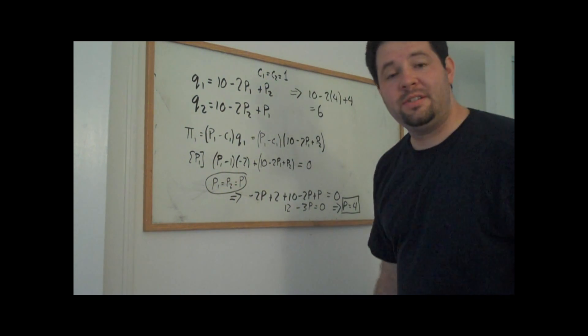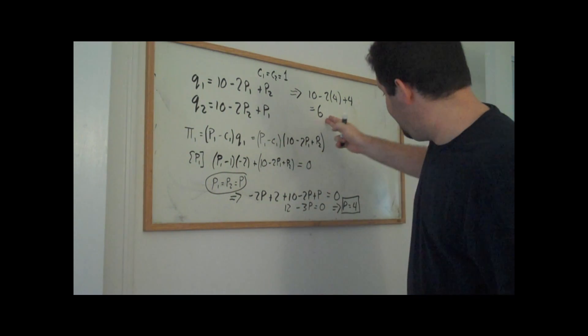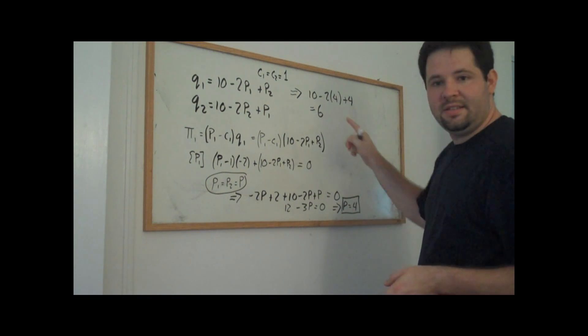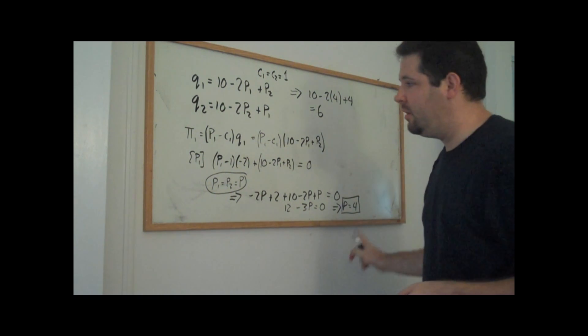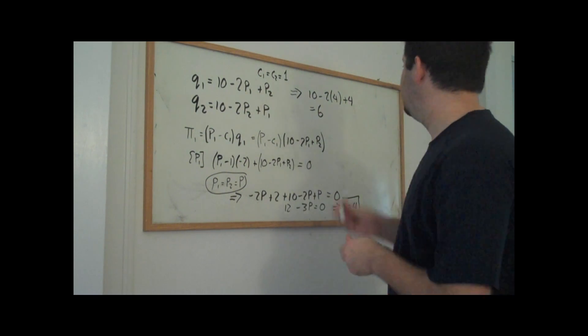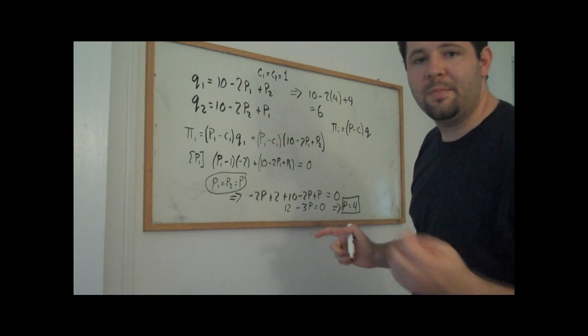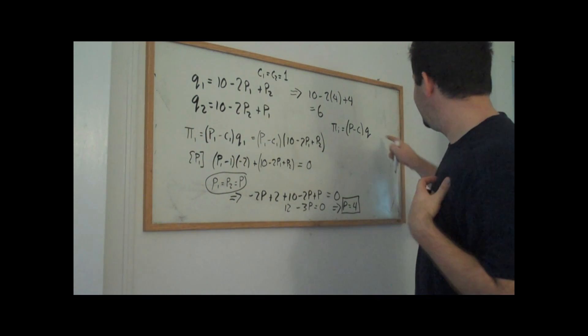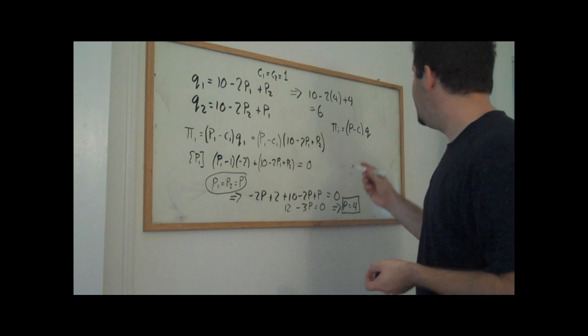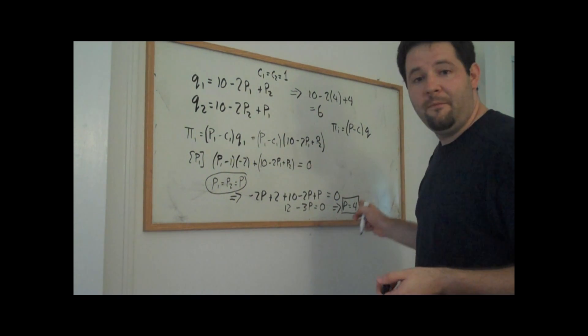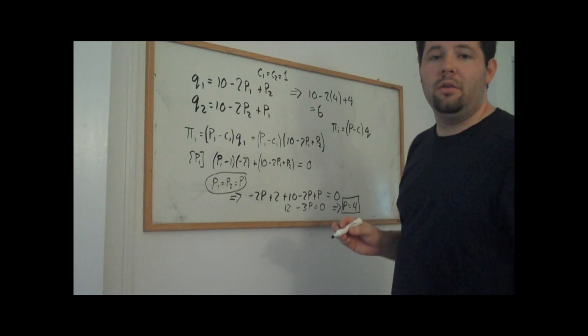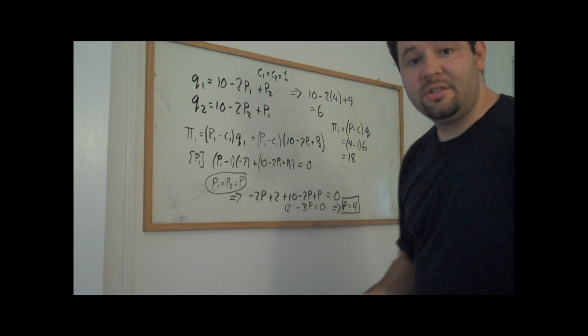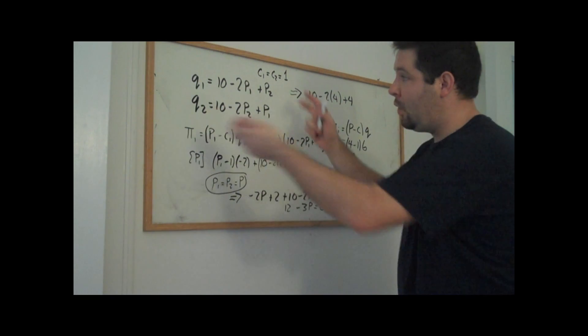Plugging in, we see that the quantity is six units. And so what we have is that this firm sells six units at a price of four dollars per unit. And so we can compute profits. Remember the profits are just the price minus the marginal cost times the quantity because we have no fixed costs. If there were fixed costs, we would just subtract off the fixed costs at this stage. On each unit, the firm is making four minus one dollars per unit. And the firm sells six units. And so in this case, where we have differentiated products.